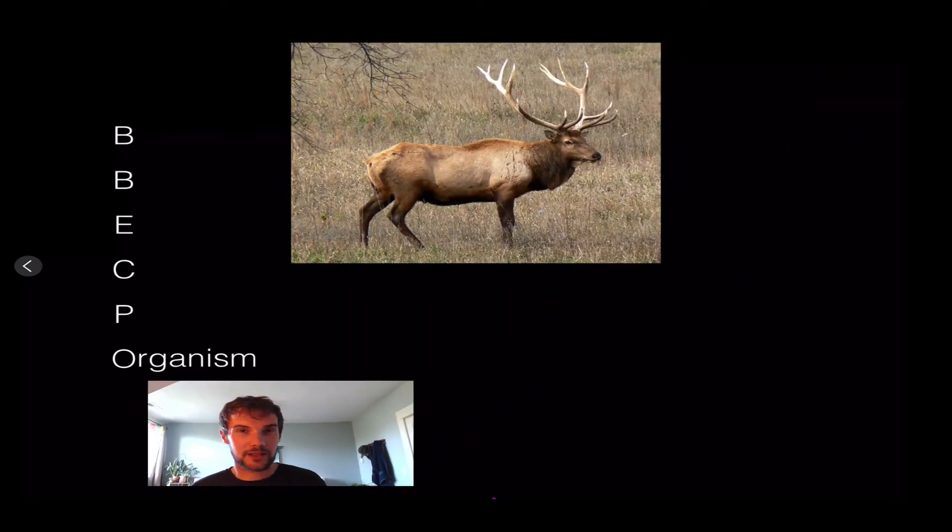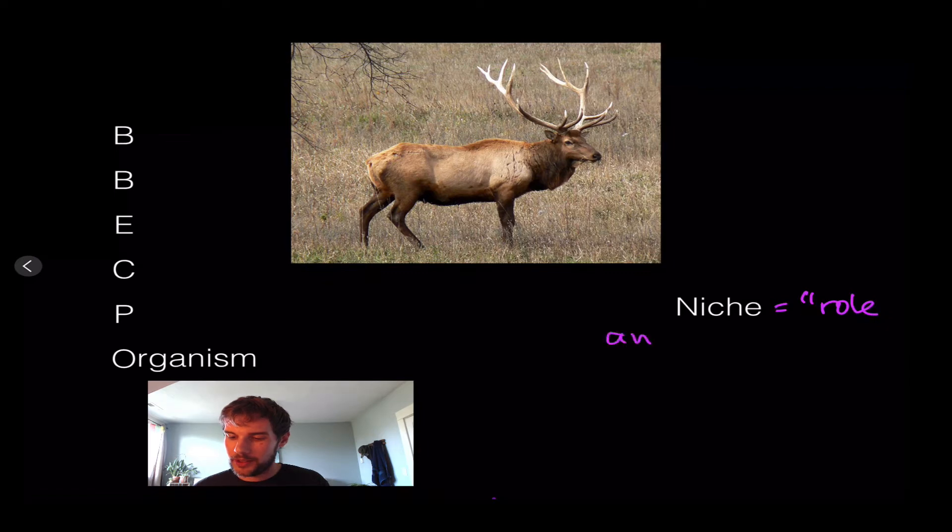An organism is a single individual, and that individual has a certain role in its ecosystem, which we call the niche. A niche is the role an organism has in its environment or ecosystem. There are two different types of niches.